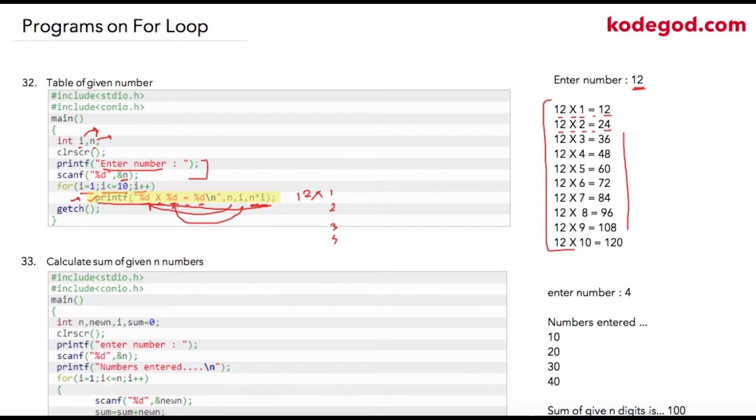Let's assume i has become 10 now. 10 less than or equal to 10, which is a true condition, it will print n multiplied by 10 equal to 120. Once this is printed, your i will be incremented to 11, and the condition will be false because 11 is not less than or equal to 10. So your for loop will be terminated, and your output on the screen will be like this.